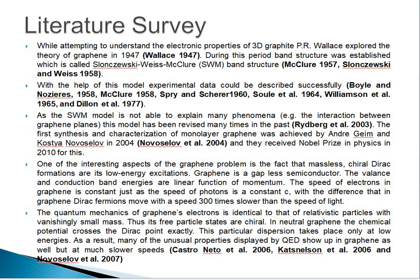The purpose of the literature survey is to provide foundational knowledge of the device. A literature review is a comprehensive summary of previous research on a topic. While attempting to understand the electronic properties of 3D graphite, a great researcher, Wallace, in 1947 explored the theory of graphite. After one decade, another great researcher, McClure, in 1957 proposed the band structure, which is called the Slonczewski-Weiss-McClure (SWM) band structure. The model was experimentally well-explained by a number of researchers from 1958 to 1977.